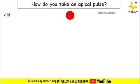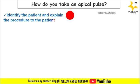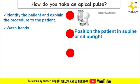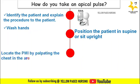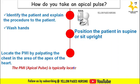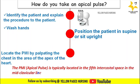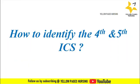For the procedure to assess apical pulse: identify the patient and explain the procedure, wash hands, and position the patient supine or sitting upright. Locate the point of maximal impulse by palpating the chest in the area of the apex of the heart. The PMI is typically located at the fifth intercostal space in the mid-clavicular line of the chest.